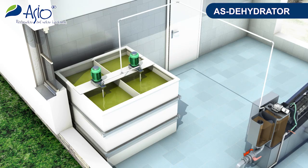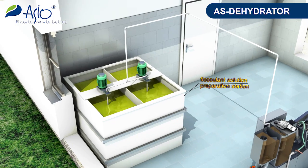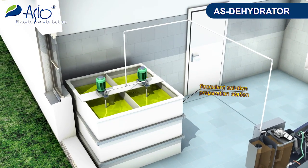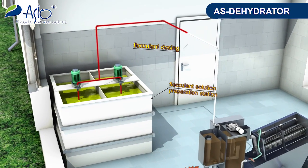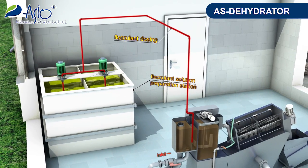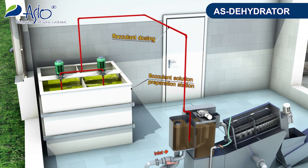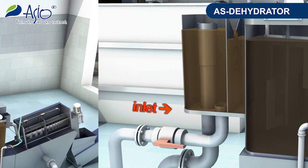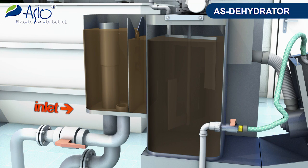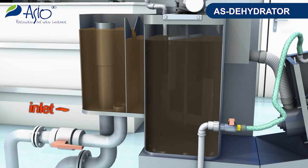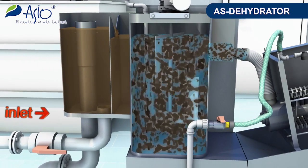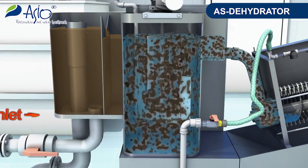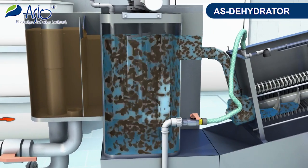The flocculation tank is stirred with a low-speed paddle mixer and a polymeric flocculant is dosed into the incoming sludge. The flocculant solution is prepared directly at the wastewater treatment plant by mixing the concentrated reagent with water in an independent tank, then dosed in sufficient quantities by a dosing pump. The reaction of the flocculant with the sludge causes clearly defined flakes to be formed in the flocculation tank and subsequently brought into the dewatering drum.